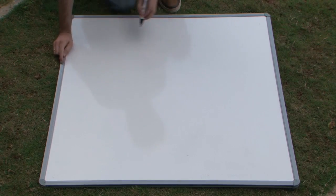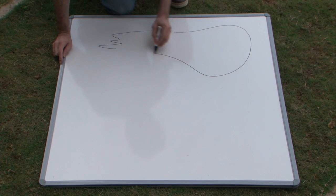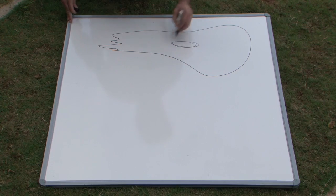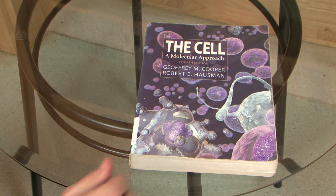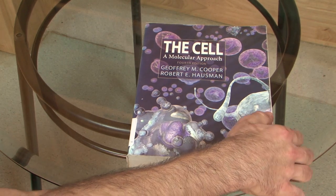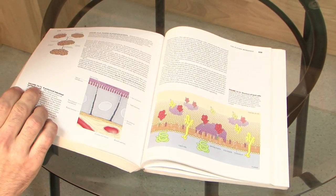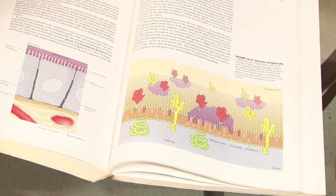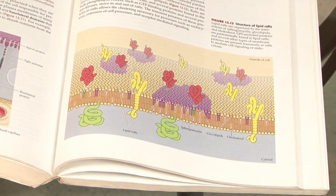The plasma membrane is the skin of a cell. It defines the boundary of any cell. One could visualize the plasma membrane as a sea of lipids embedded with a collection of proteins. The classical textbook picture is the fluid mosaic model proposed by Singer and Nicholson in the 1970s, according to which the cell membrane is a two-dimensional fluid in which lipids and proteins diffuse.